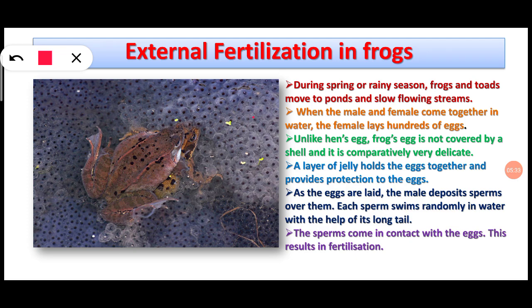Here you can see these black dots — these are the eggs of the female frog. The eggs do not have a shell like a hen's egg, so they are more delicate. Once the sperms are released in the water, they swim randomly with the help of their long tail. The sperms of a frog also have a long tail that helps in movement. Once a sperm comes in contact with an egg, this results in fertilization.